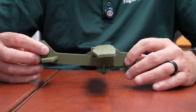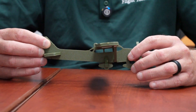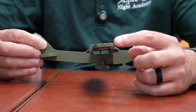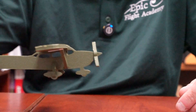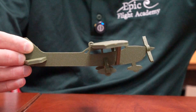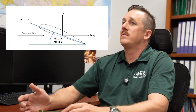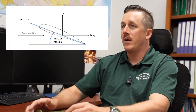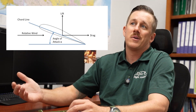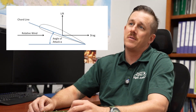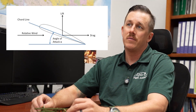An angle of attack is the angle between what's called a chord line — an imaginary line between the center of the leading edge of the wing and the trailing edge of the wing — and the relative wind. Relative wind is the wind that is opposite of the plane's flight path. This angle dictates how much lift is being created by our wings, and ultimately can dictate when we're going to exceed the critical angle of attack, where we will have a stall.